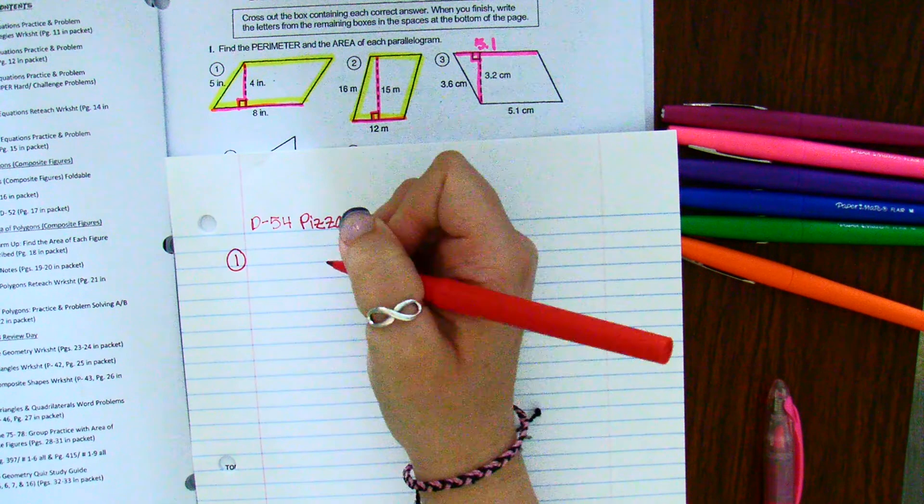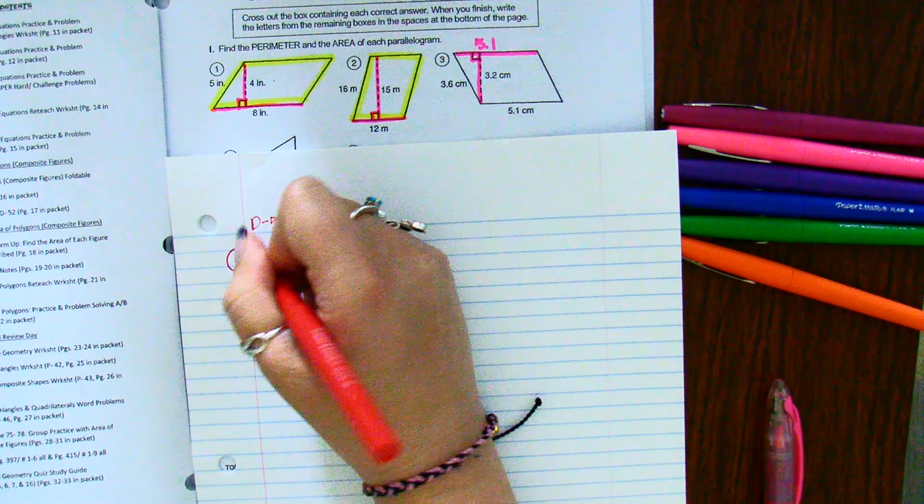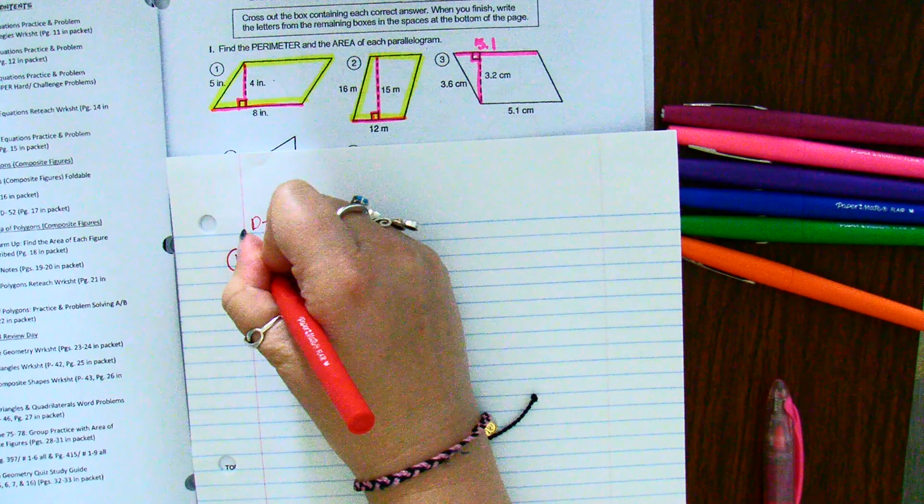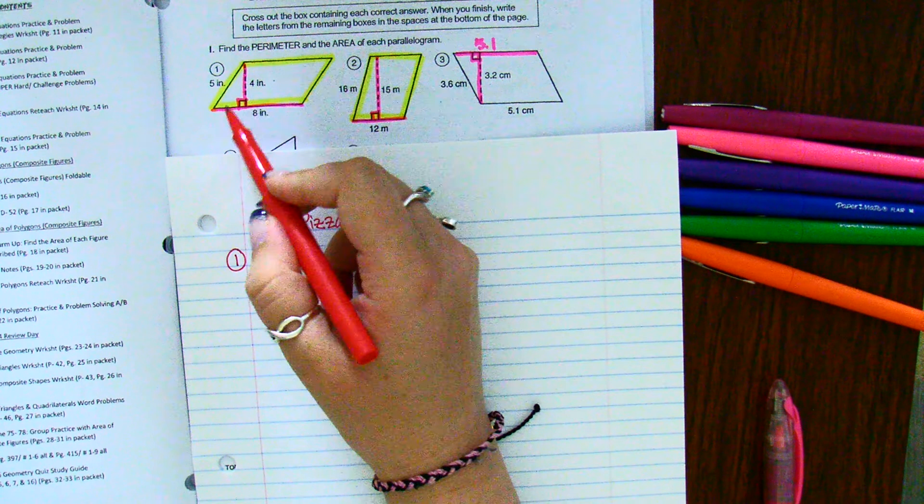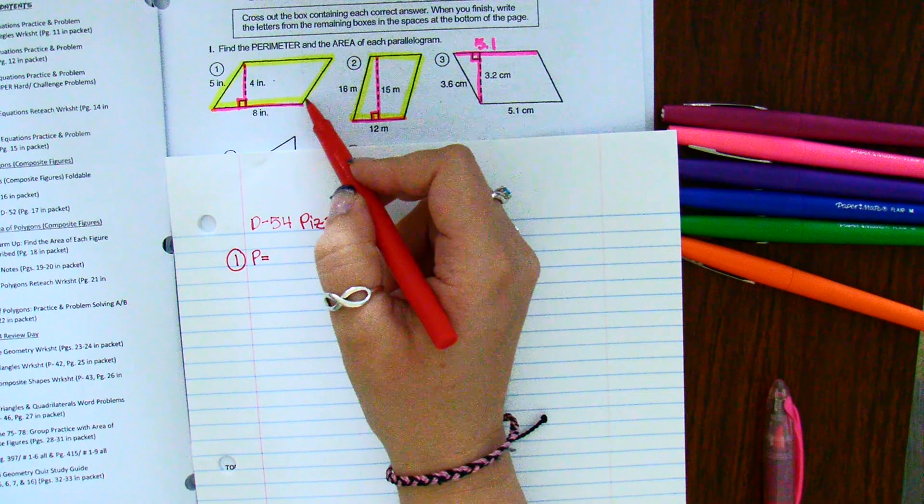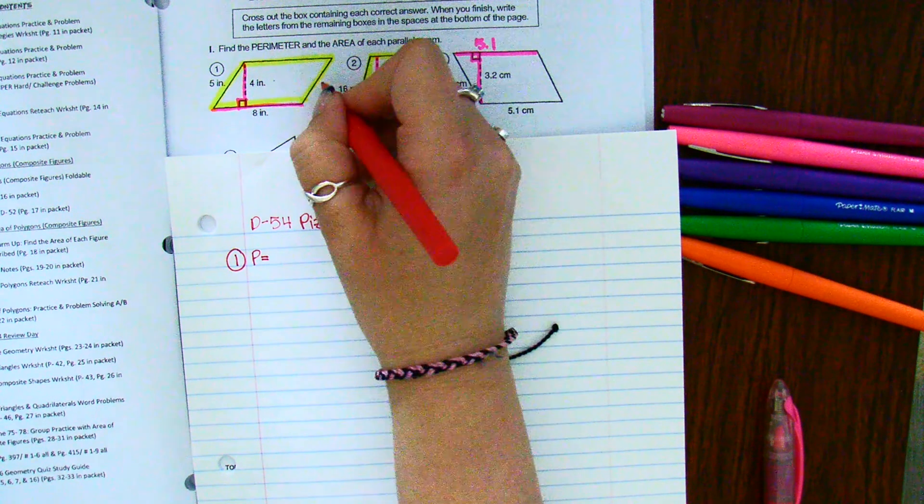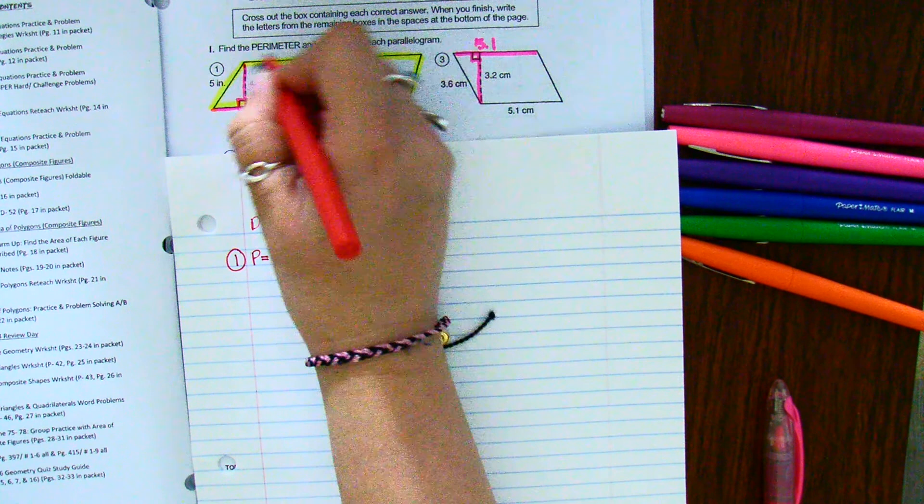Number one. In order to find the perimeter, you add along the outside. So that would be the five, the eight. What's this? Same as this, and they're five. And then this one, which is also eight. So five, right there,